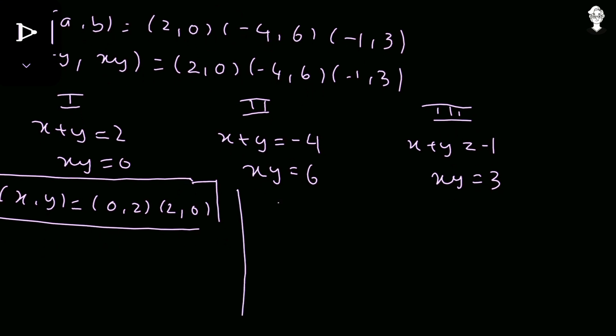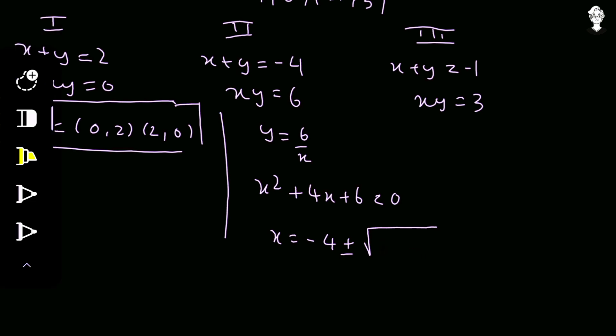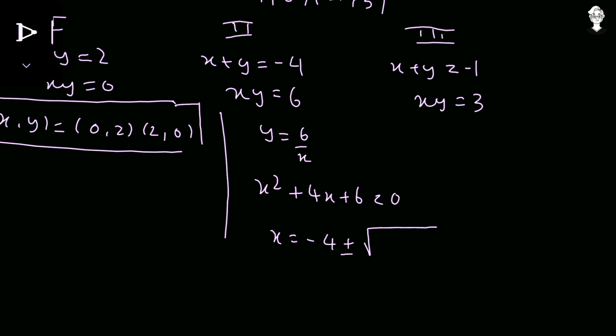For Case 2: xy = 6 gives y = 6/x. Substituting into x + y = −4 yields x² + 4x + 6 = 0. Applying the quadratic formula: x = (−4 ± √(16 − 24))/2 = (−4 ± √(−20))/2. Since the discriminant is negative (−20), x is imaginary — not in the real plane — so Case 2 gives no real solutions.